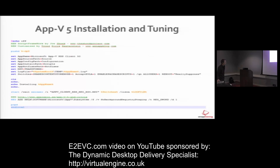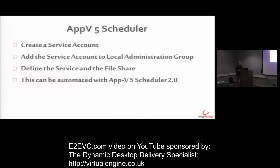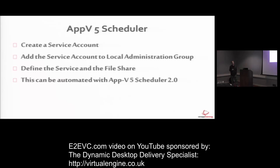With the App-V5 install, we enable the Shared Content Store mode, accept the license, enable the package scripts — needed if you want to run scripts inside App-V packages — and we also disable No Background Registry Staging for App-V5. For the App-V scheduler, prior to Hotfix 4 for App-V5 SP2, you needed to create a service account, add it to the local admin group, and define the service and file share. Now with the release of App-V5 scheduler 2.0, we can unattend everything, so that's included in the automation framework as well — it simply works out of the box.